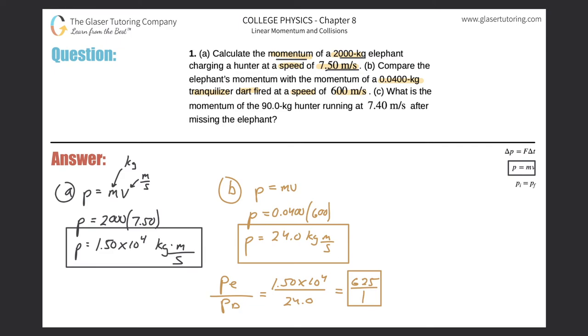Okay, let's take a look now at letter C. What is the momentum of the 90 kilogram hunter running at 7.4 meters per second after missing the elephant?